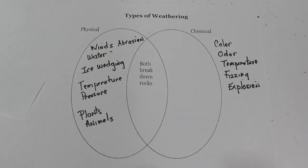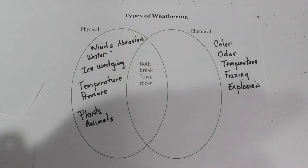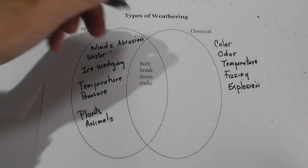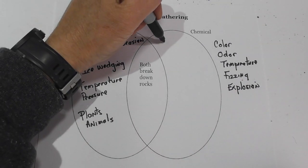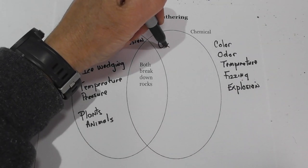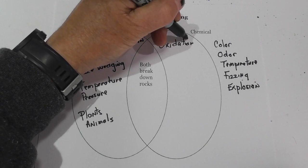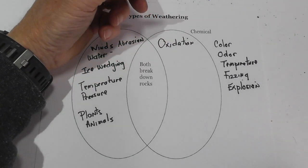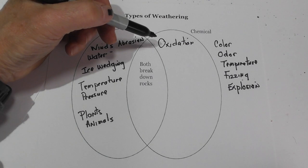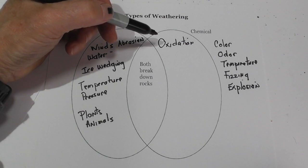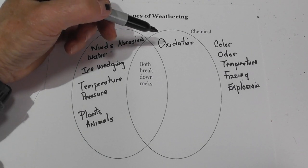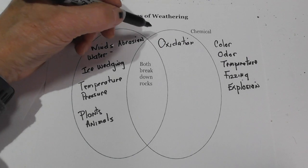So now let's go through how this happens in weathering. Let's start first with rust, or oxidation. What happens is the oxygen in the atmosphere reacts with the iron in the rock, and it turns it to rust and weakens it.